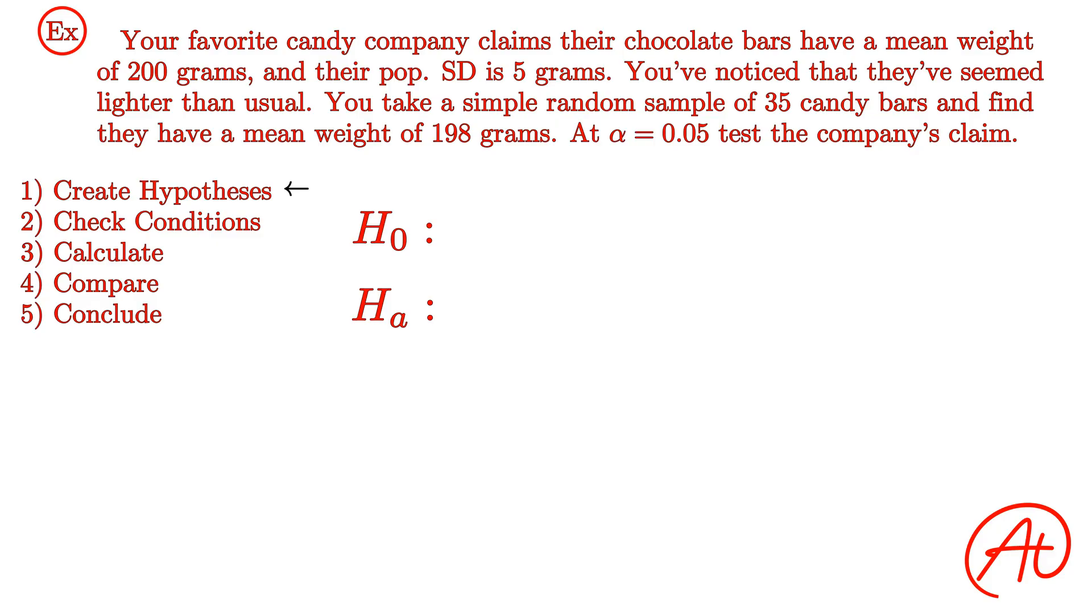Our alternative hypothesis, H sub A, is whatever we are testing about the population. This will come in one of three forms. It's either that the true mean of the population is less than some value in the problem, greater than that value, or just not equal to that value. For our problem, we are testing to see whether the true mean weight mu of chocolate bars produced by the candy company is actually less than 200 grams. Then our null hypothesis is always just the opposite of this, which makes our null hypothesis H sub O, mu is greater than or equal to 200.